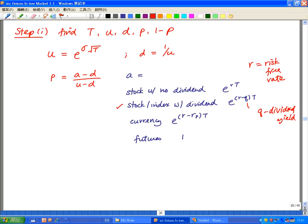If it's a currency, we'll do e to the power r minus foreign risk-free rate times t. If it's a futures contract, so if it's an option on a futures, we'll put in 1 as our a.